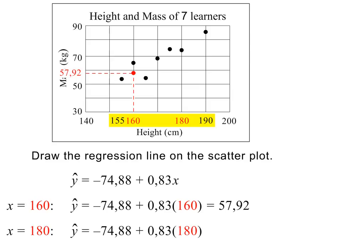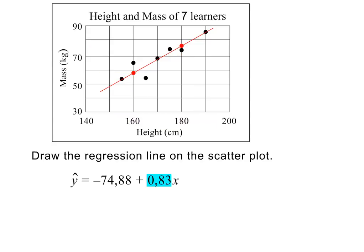Next, we substitute 180 in place of x in the equation. Correct to two decimal places, this gives 74.52 for y hat. Let's also plot this point on the scatter plot. To draw the regression line, we draw a line through these two plotted points. The gradient in our equation is 0.83, which is positive. This confirms that our regression line is correct because it is sloping upwards.